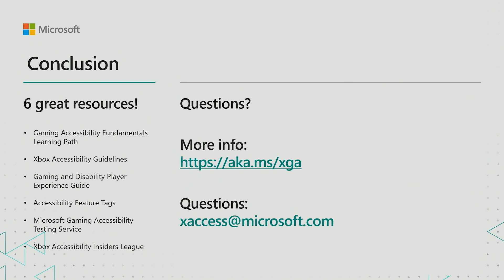The Microsoft Gaming Accessibility Testing Service can then be utilized to help validate that the work you put in has resulted in a product that is as accessible as you want it to be. And finally, once your game has shipped, the Xbox Accessibility Insider League can help you procure disability community feedback to consider implementing as part of updates to your product or to take forward into future products. On behalf of the entire gaming accessibility team here at Microsoft, we hope you find these six resources useful as you endeavor to make your games more inclusive of gamers with disabilities.